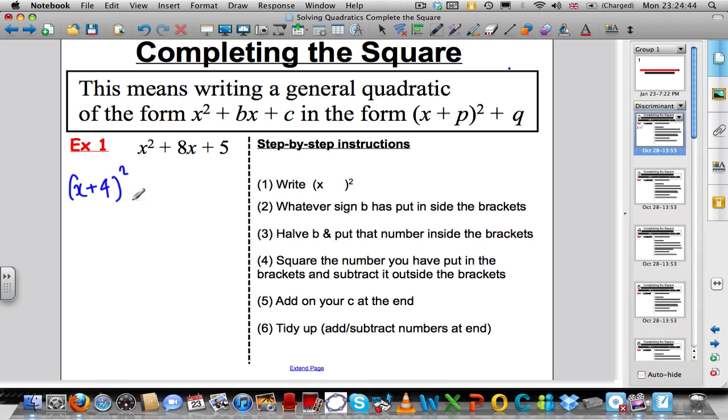Then in your head, square this number you've just put in the brackets, so do 4² and subtract that answer in your head. Finally, add on the number term left in the original expression and we are nearly there with the completed square form. Keep your (x + 4)² here. -16 + 5 is actually -11 and that is the completed square form of the original expression.